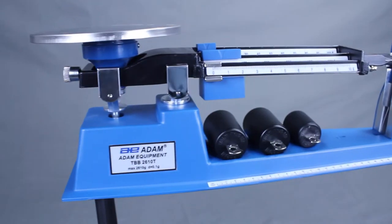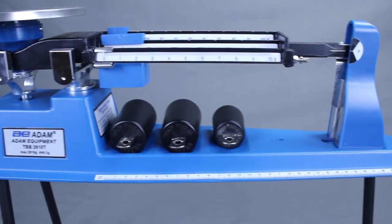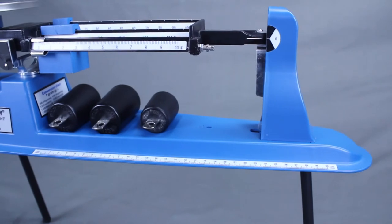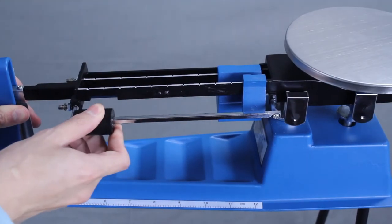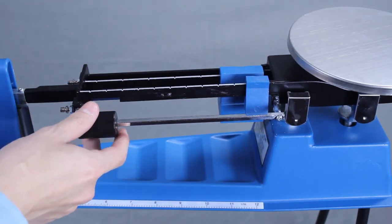The TBB 2610T contains the same features as the TBB 2610S and adds a tear bar that enables users to tear up to 225 grams.